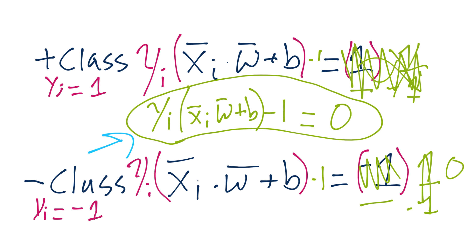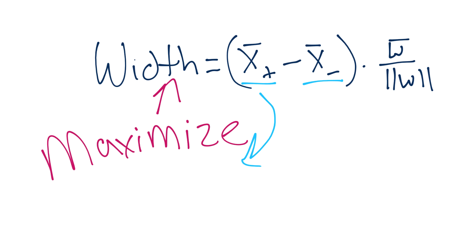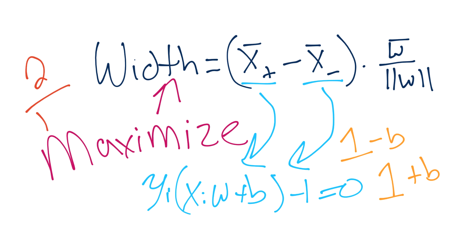And then it was actually the same thing here, right? Both of those equations. And if we were to do the algebra in this example, we would find that the x plus is actually 1 minus b. And then we'd have 1 plus b for the x minus. And then again, if we worked out all of the algebra, we'd find out that this entire width equation comes down to being 2 over the norm magnitude of vector w. Width is equal to 2 over the magnitude of w.